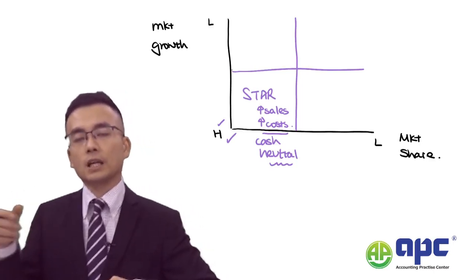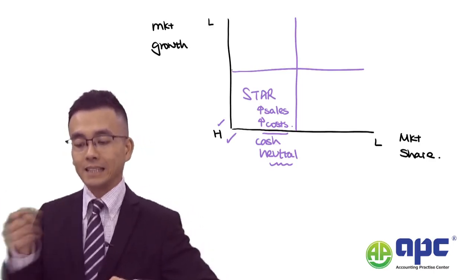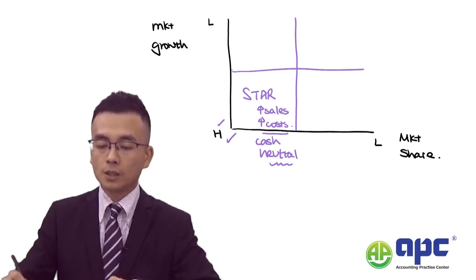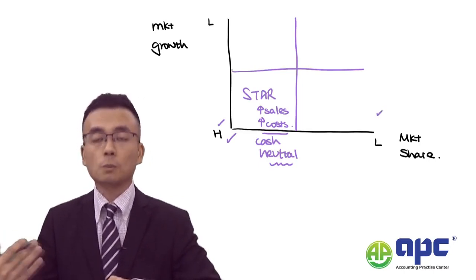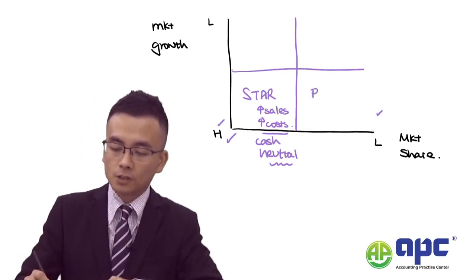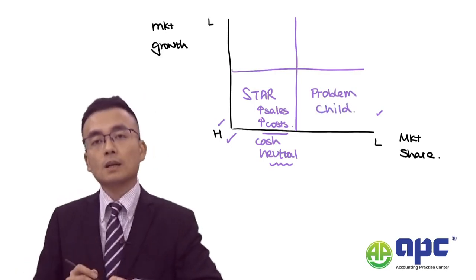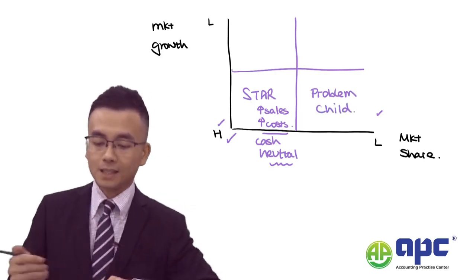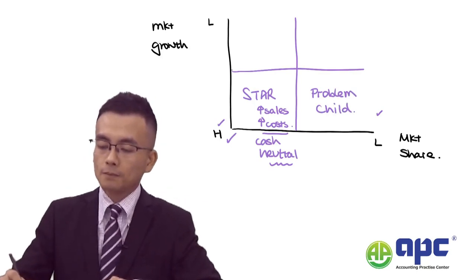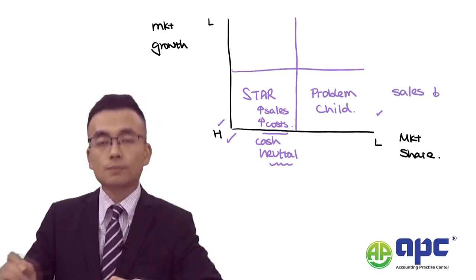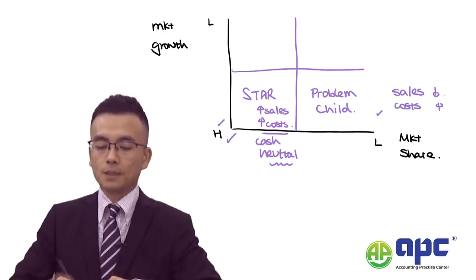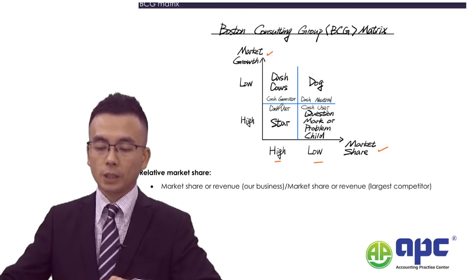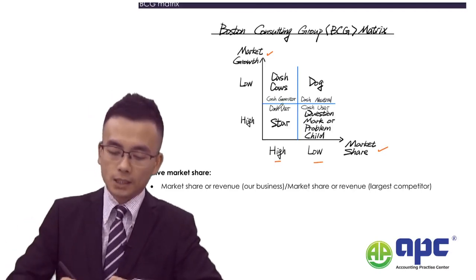If we first introduce a new product in the industry, the relative market share will be quite low, but the market growth or future potential may be quite good. This is called the Problem Child. Sales may not be strong, but costs are quite high. In essence, we are talking about the Question Mark as the cash user.